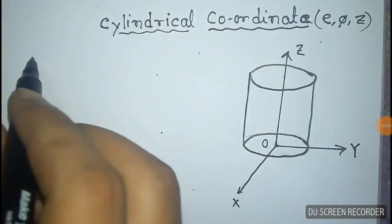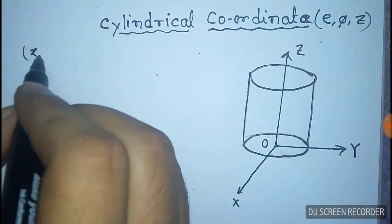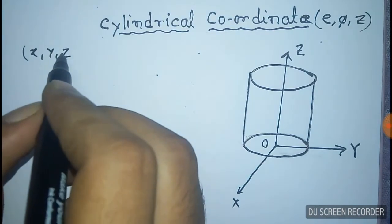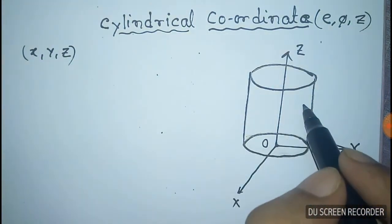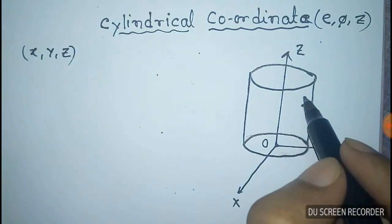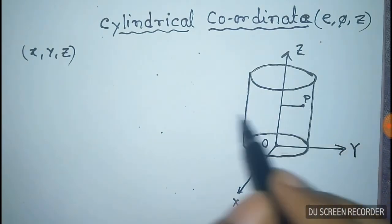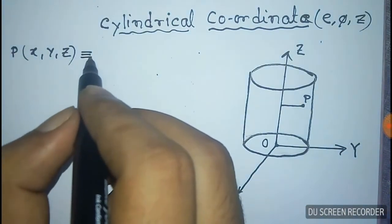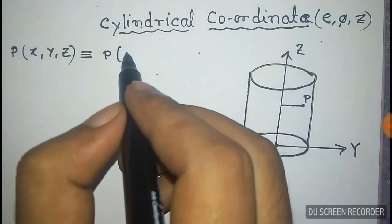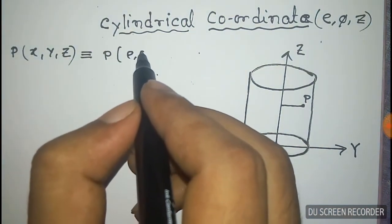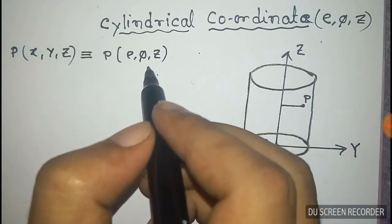We have to get the relation between Cartesian and cylindrical coordinates. This is the Cartesian point P on the surface of the cylinder that's given by X, Y, Z, and we have to convert it to the form of rho, phi, Z, that is the coordinates of cylindrical coordinates.